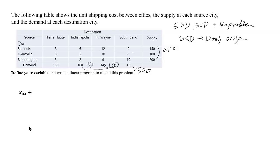We're going to write a dummy. For the dummy, you put 0 for all the costs, because you don't want to mess up the final cost. If you put some other number, that's going to increase the final cost, and that's not what we want. The supply that the dummy would provide will be this fake 50 supply. Whoever receives this from the dummy, they're not really getting anything.